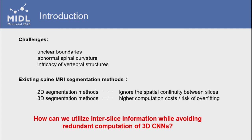With the success of deep learning in medical imaging, many deep learning-based methods are proposed for the task. Among all these methods, two-dimensional methods usually divide the 3D volumes into a sequence of slices for segmentation, which ignores the spatial continuity between slices, while three-dimensional methods usually suffer from higher computation costs and higher risk of overfitting. So our motivation is: how can we utilize inter-slice information while avoiding redundant computation of three-dimensional methods?